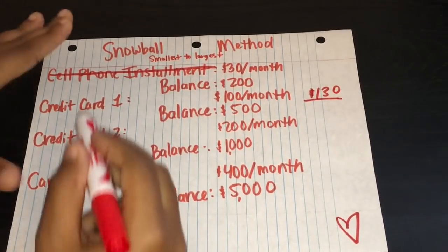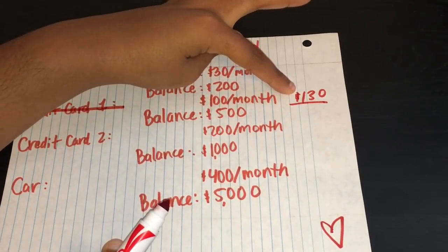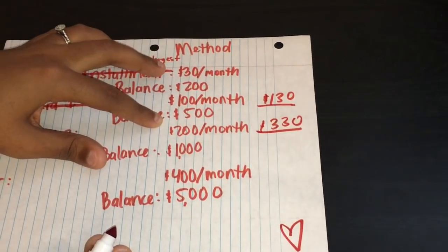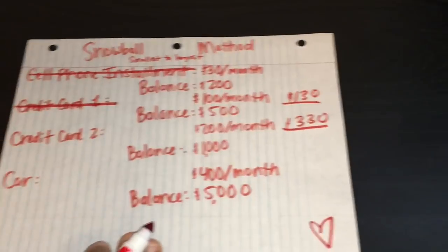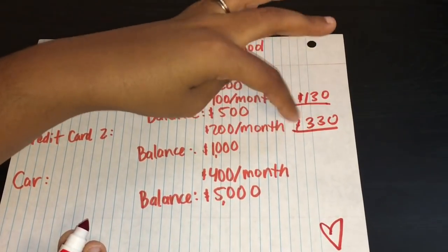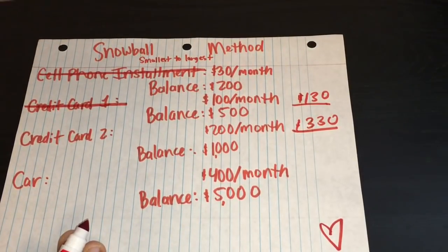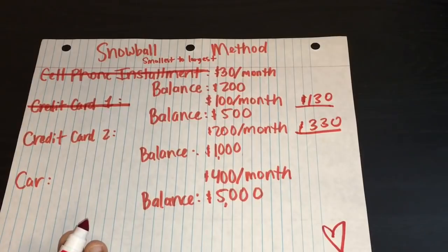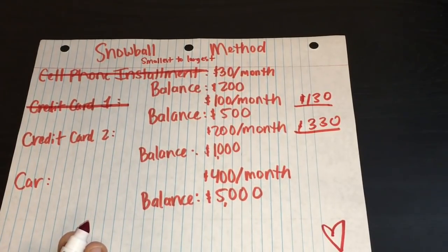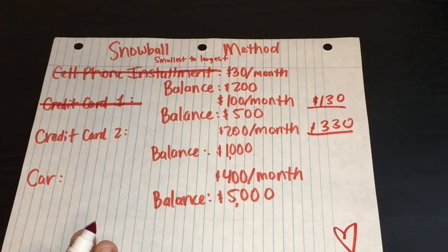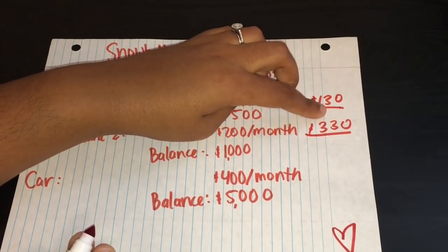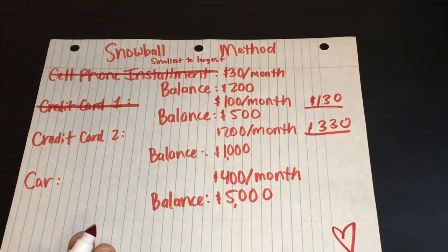So once you cancel out credit card one, you then have $130 that you can add to credit card two. So now you're up to $330 — your snowball has grown to $330. At this rate, you are putting $330 minimally towards your balance of $1,000. Let's say the only money you have is the $330 to put towards debt — you're going through a rocky couple of months and haven't been able to decrease your expenses anymore. That's a minimum you have to put towards credit card two is $330 a month. What that means is in about three or four months, you're going to have this $1,000 balance paid off. And that's the thing I'm trying to emphasize today.